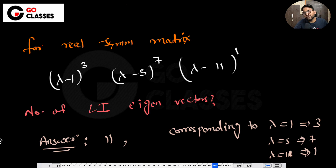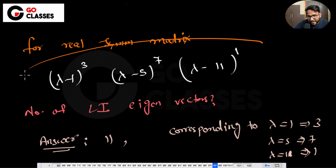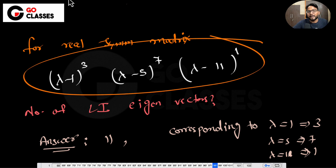Corresponding to lambda equal to 1 there are 3 linearly independent eigenvectors; corresponding to lambda equal to 5 there are 7; corresponding to lambda equal to 11 there is 1. For a real symmetric matrix, life is easy — you always have exactly n linearly independent eigenvectors.